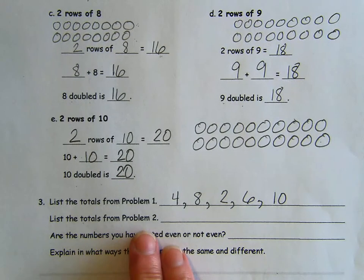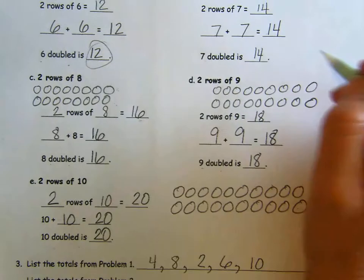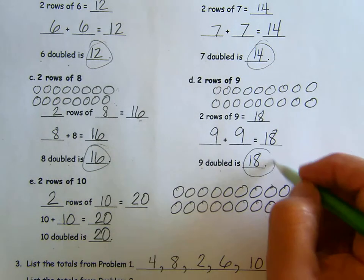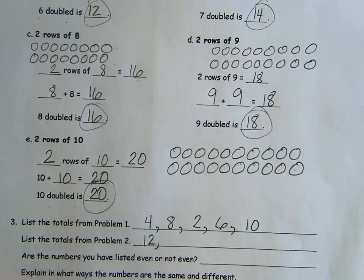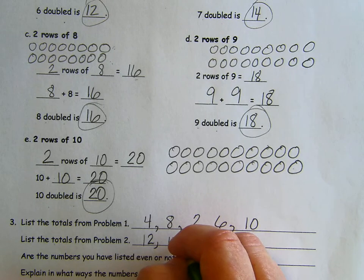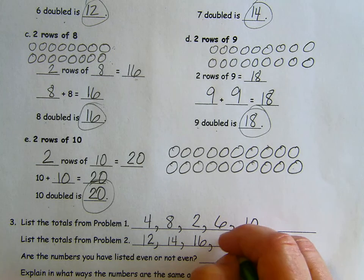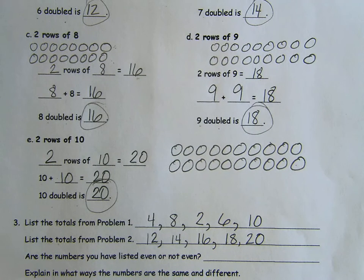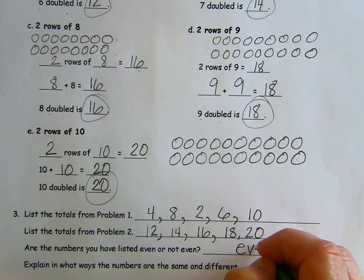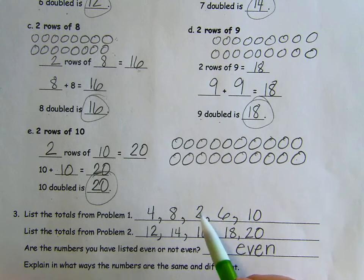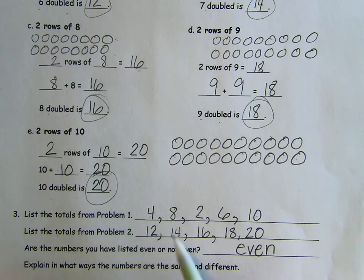Now they want us to list the totals from problem two. So here are our totals, 12, 14, 16, 18, and 20. Again, I'm going to write a comma in between because I'm making a list. So looking at these numbers, are these even or not even? These are the even numbers. When we skip count by two, we get even numbers. Two, four, six, eight, ten, 12, 14, 16, 18, and 20.